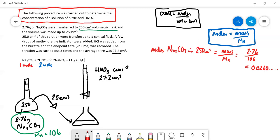This is in 250, whereas here we're only taking 25 centimeters cubed out for the titration. Therefore, the moles of sodium carbonate in 25 is going to equal that divided by 10, which is 0.026 over 10, which equals 2.60 times 10 to the minus 3.